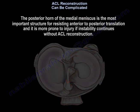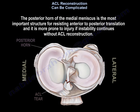The posterior horn of the medial meniscus is the most important structure for resisting anterior to posterior translation, and is more prone to injury if instability continues without ACL reconstruction.